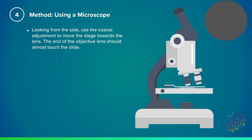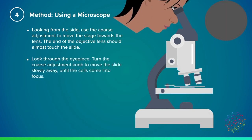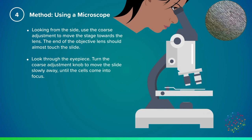Turning the microscope on now, you can look through the eyepiece. You can again turn the coarse adjustment knob to slowly move the slide away, until the cells come into focus in the field of view, as you can see on the right hand side.